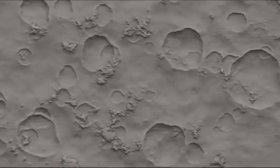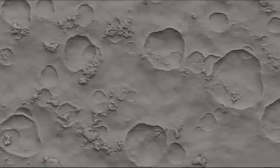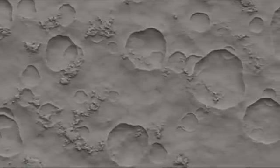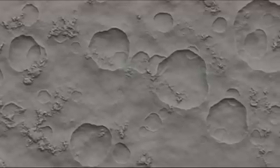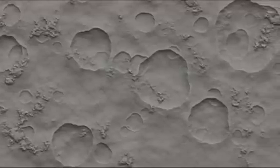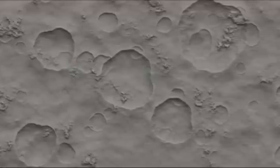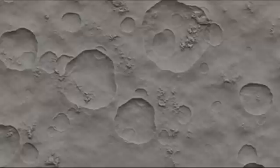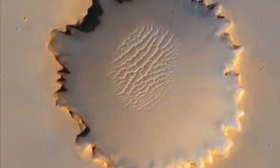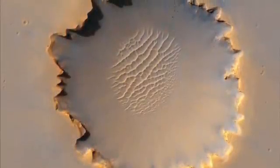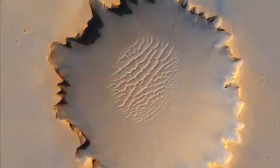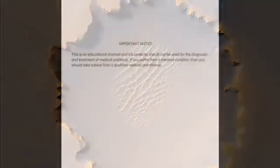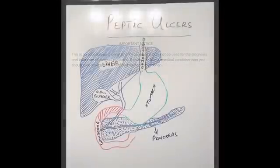Hello everyone and thanks for watching today's video. Today I'm going to talk about a condition called duodenal ulcers. Whenever I look at them they remind me of either many small little craters on the surface of the moon or our earth, or one or two very large craters. So they come in different shapes and different sizes.